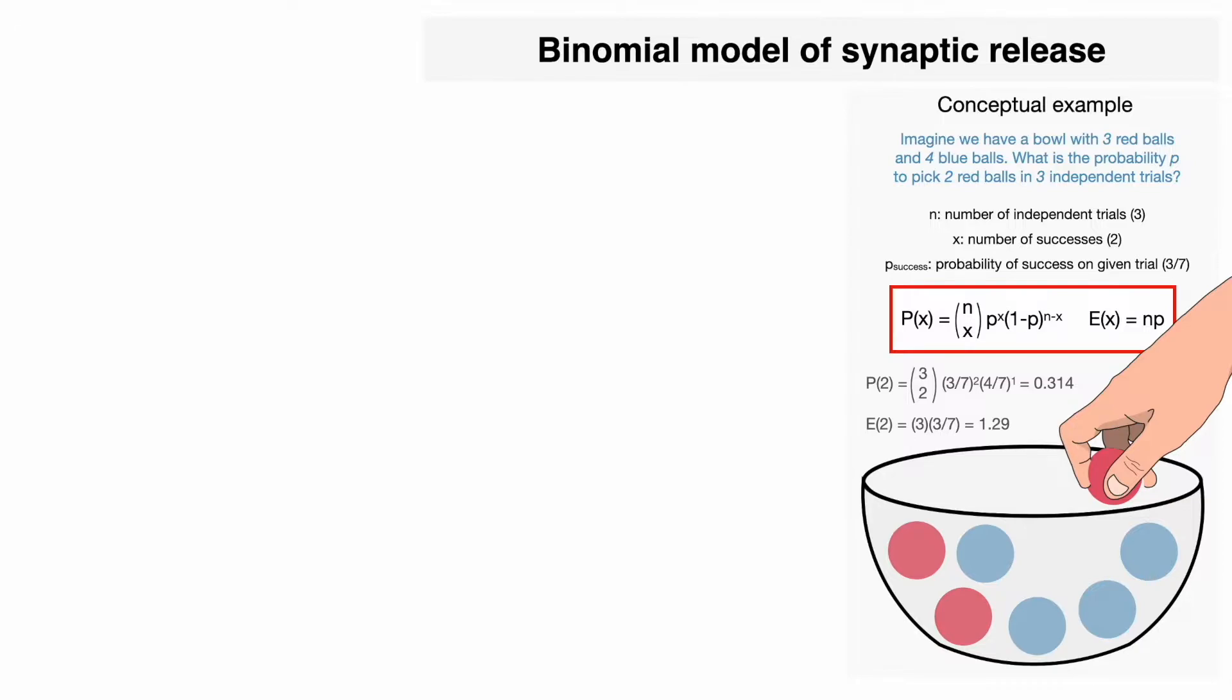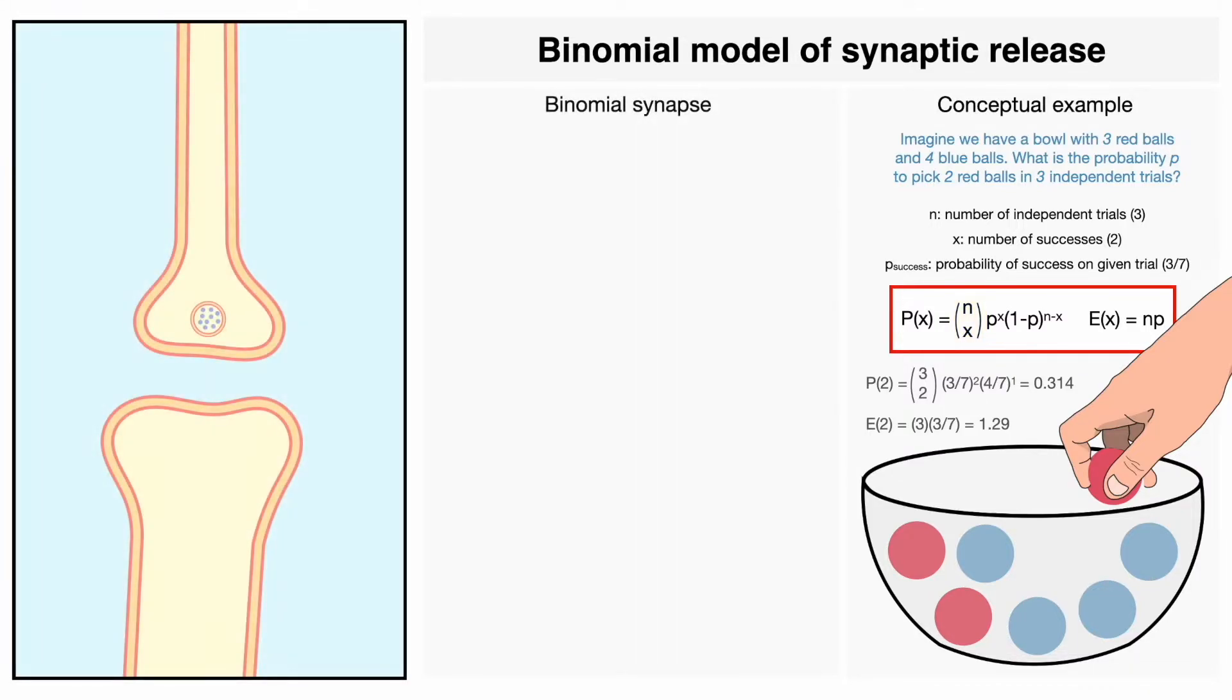Now, it doesn't really make too much sense here as decimal balls don't exist, but it will be important shortly. Finally, I want to touch quickly on this term here, which reads as n choose x. This is an important factor in our equation because it corresponds to the number of ways there are to choose a red ball x times out of n. In our example, there are three ways. Now that we understand this, let's apply that knowledge to a synapse.